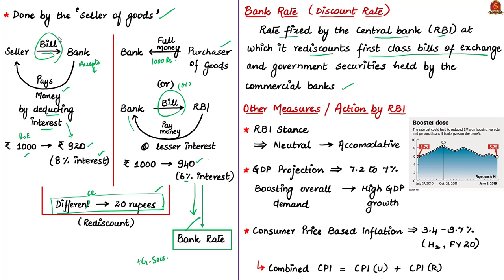By varying bank rates, the Reserve Bank of India controls credit in the system. If RBI increases the bank rate, the banks' profit may be affected, so banks will not approach RBI for discounting and will instead charge higher discount rates from the customer. The customer may then not discount their bill with the bank. If all customers do this, money will be concentrated in the banks only, meaning the money supply in the economy is reduced. Depending on economic conditions, RBI alters the bank rate.